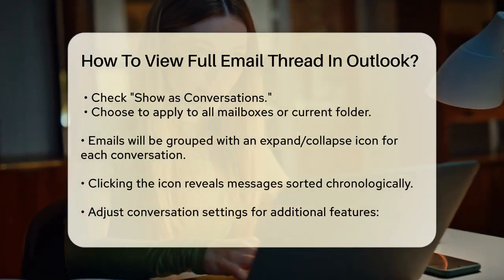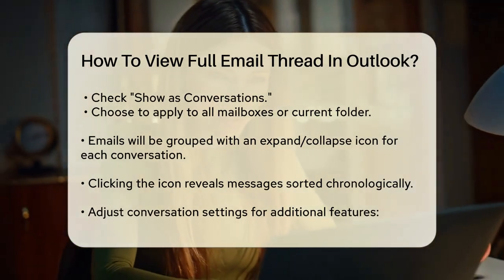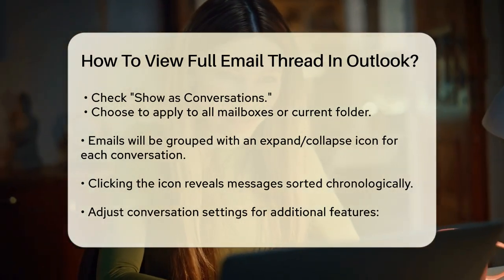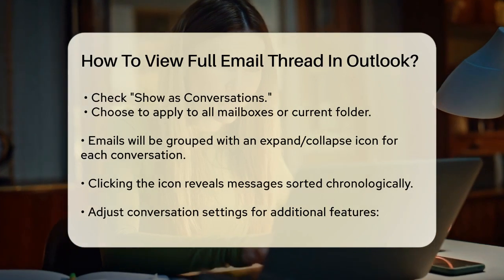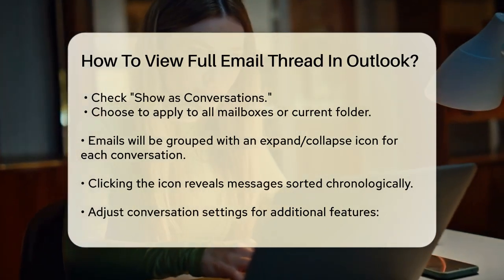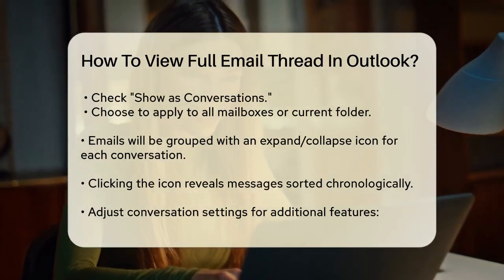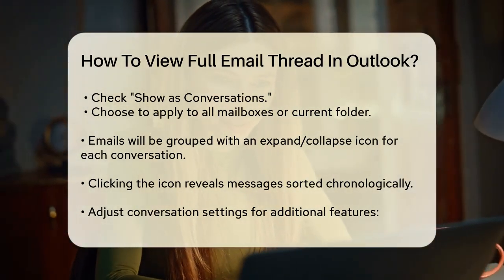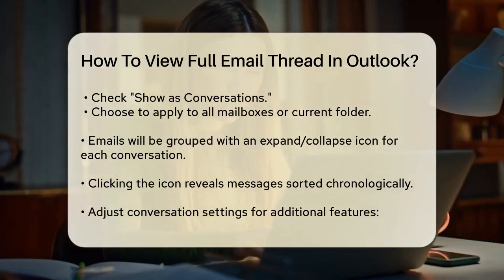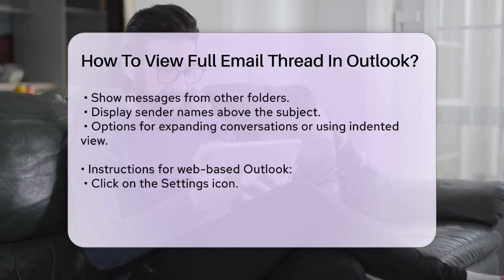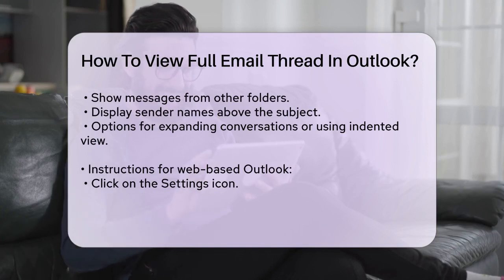If you want to see messages from other folders or your sent items within the conversation, you can adjust the conversation settings. Click on the View tab again, then select Conversation Settings. Here, you can choose to show messages from other folders or display sender names above the subject. You can also set the conversation to always expand the selected conversation or use a classic indented view.